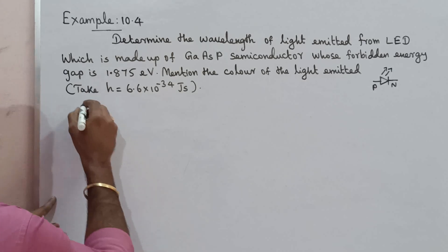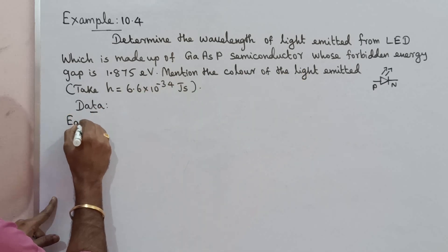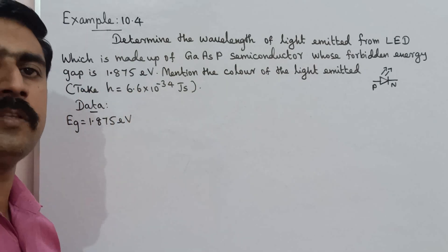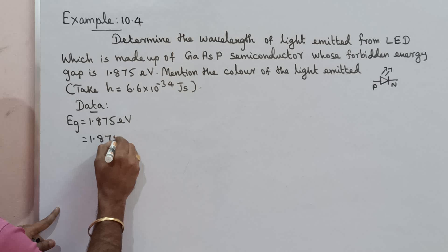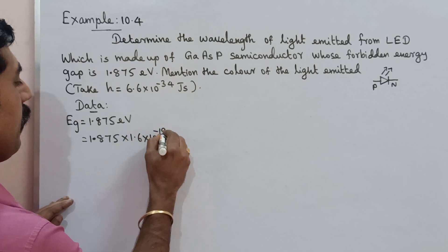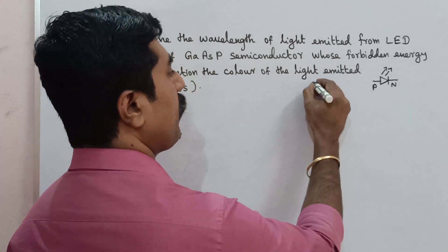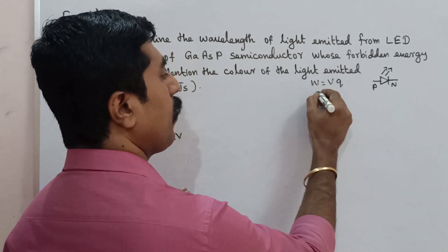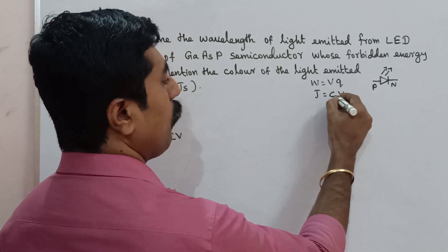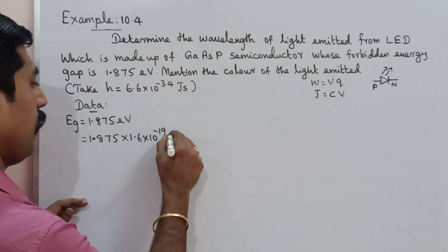So first we will see the data. The data given: energy gap EG is equal to 1.875 electron volt. Electron volt is not the SI unit. The SI unit for energy is Joule. So we convert: 1.875 into e, which is the charge of an electron, 1.6 into 10 power minus 19. The unit will be coulomb volt. Joule equals work W, which equals charge times volt. So electron volt converts to Joules.